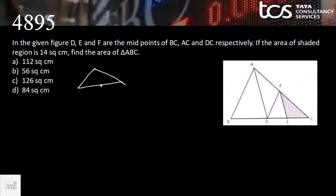We know that if in a triangle we join the midpoint from the opposite vertex, this median divides the triangle into two equal halves area-wise. If this area is x, this area is also x. So in triangle EDC, F is the midpoint, which means if area EFC is x, area EDF is also x — therefore area of EDC equals 2x.